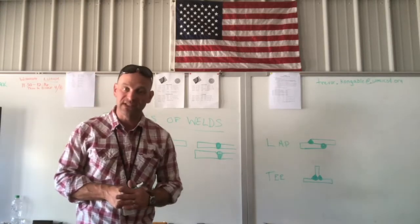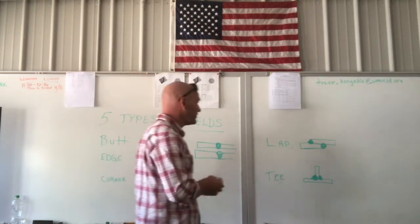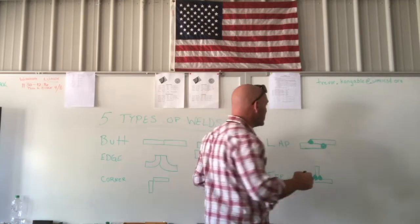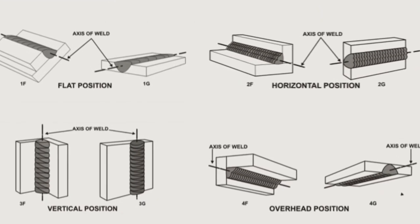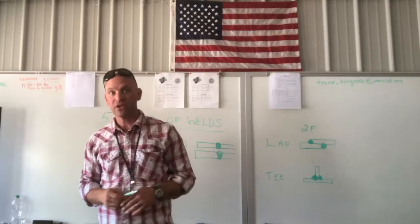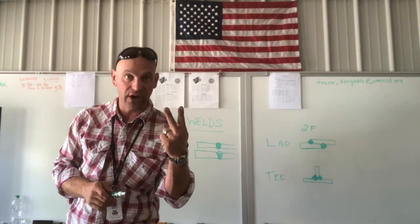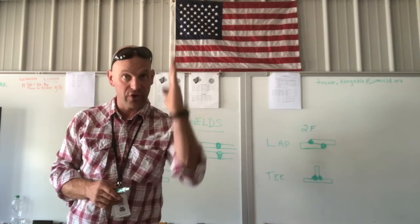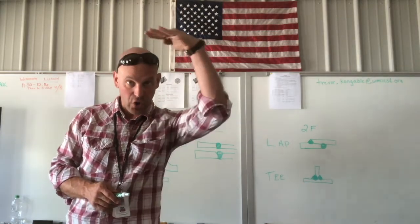So going back to our positions and our welds, we would have a lap weld and it could be in the 2F. Remember our numbers: 1 is flat, 2 is horizontal, 3 is vertical, and 4 is overhead.